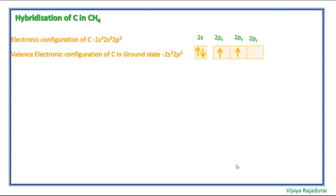This carbon needs 4 unpaired electrons. We have to excite 1 electron from 2s orbital to 2pz orbital. Here you can see this.